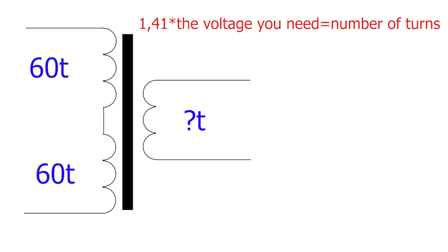Simply put, we multiply 1.41 by the required voltage and get the number of turns of the secondary winding.